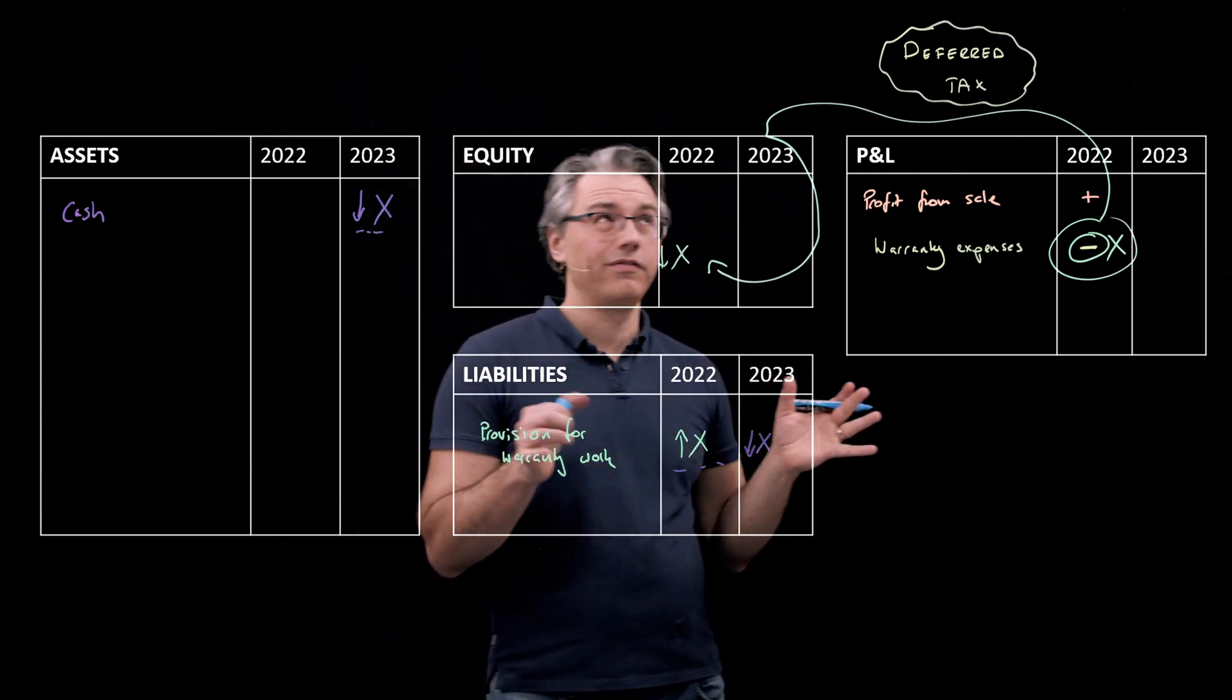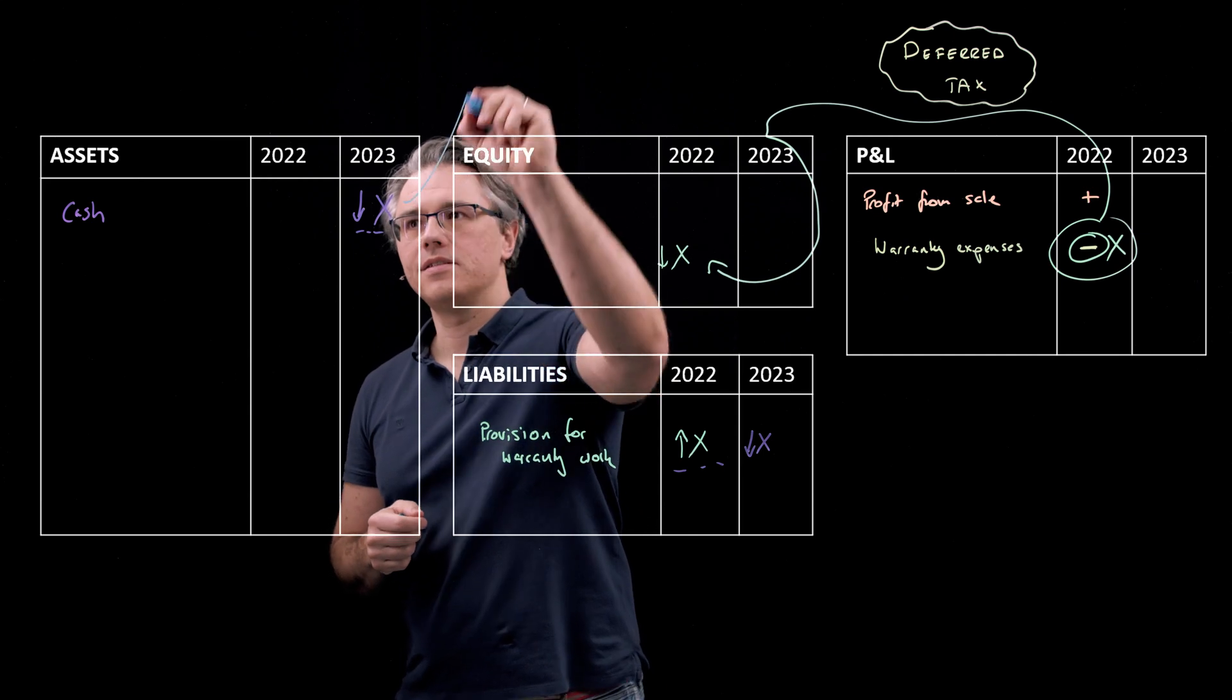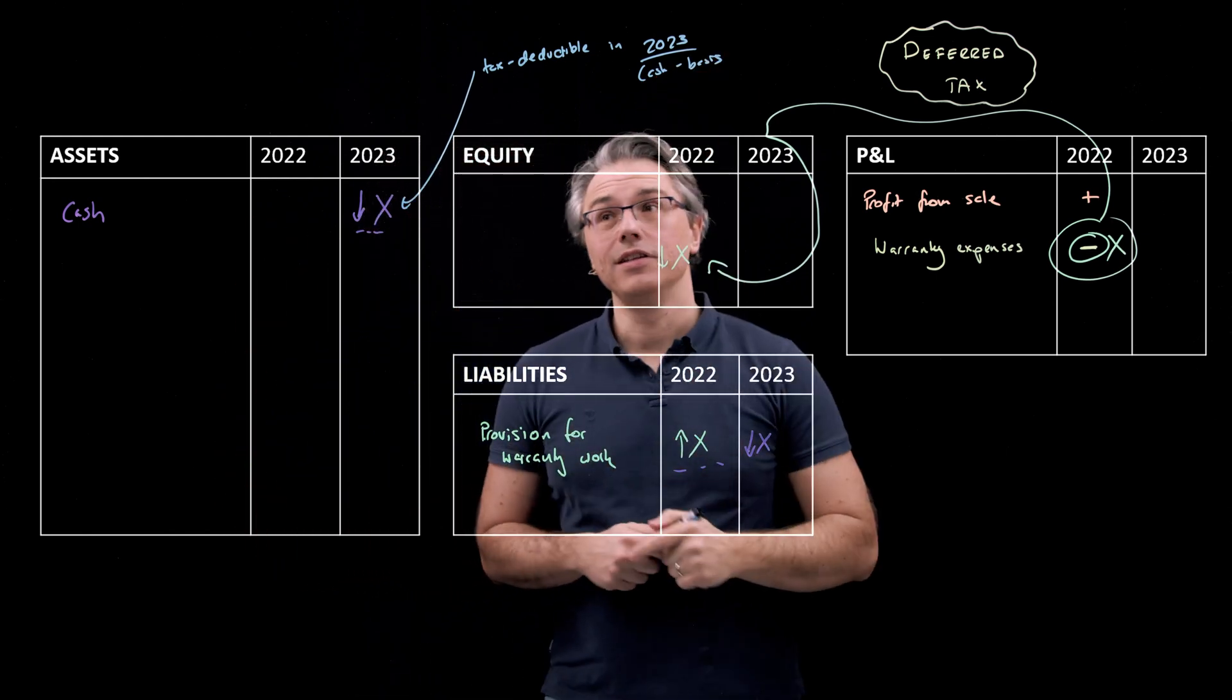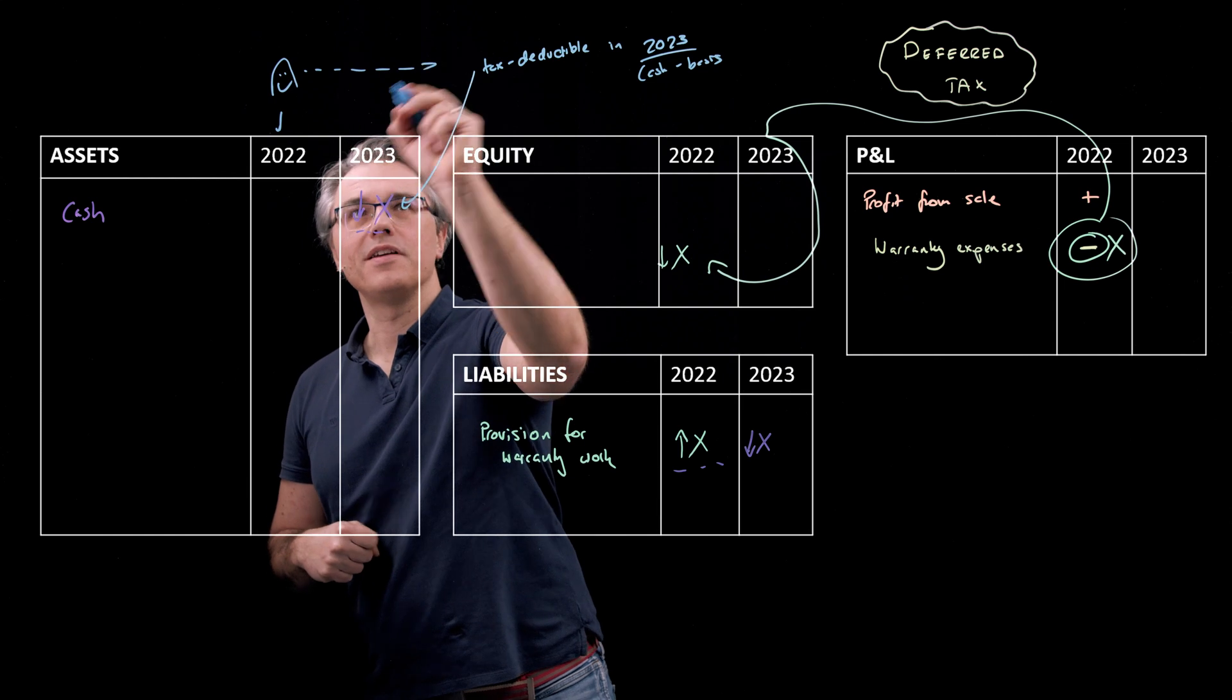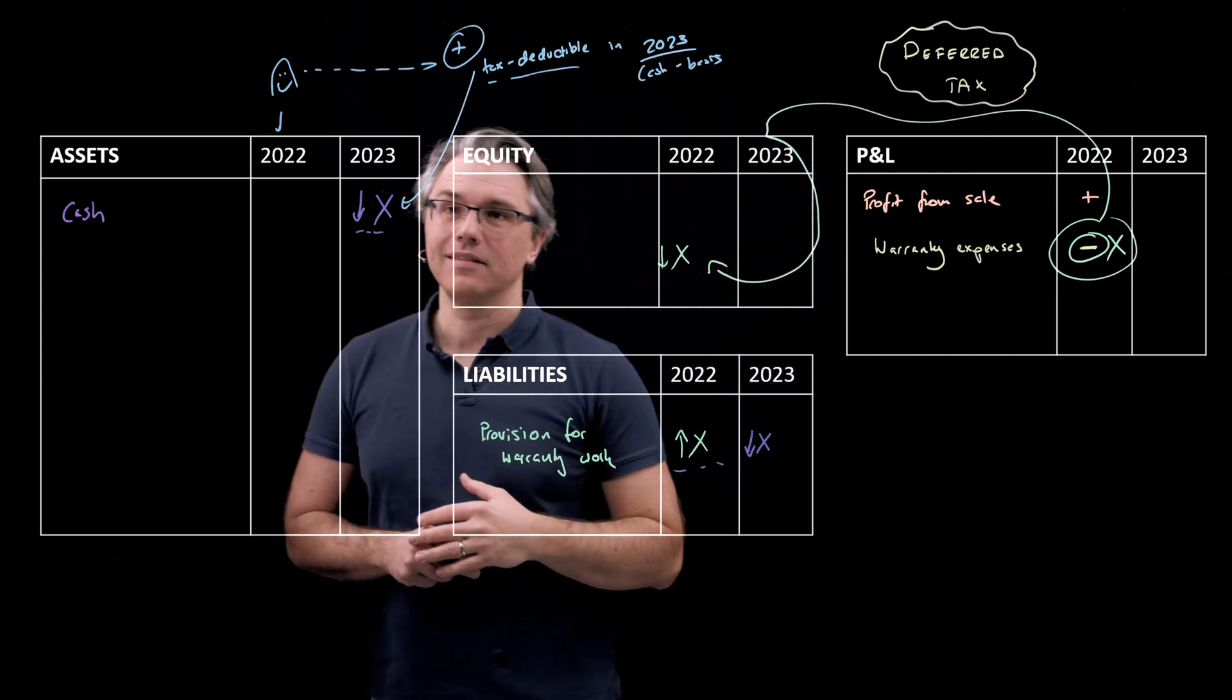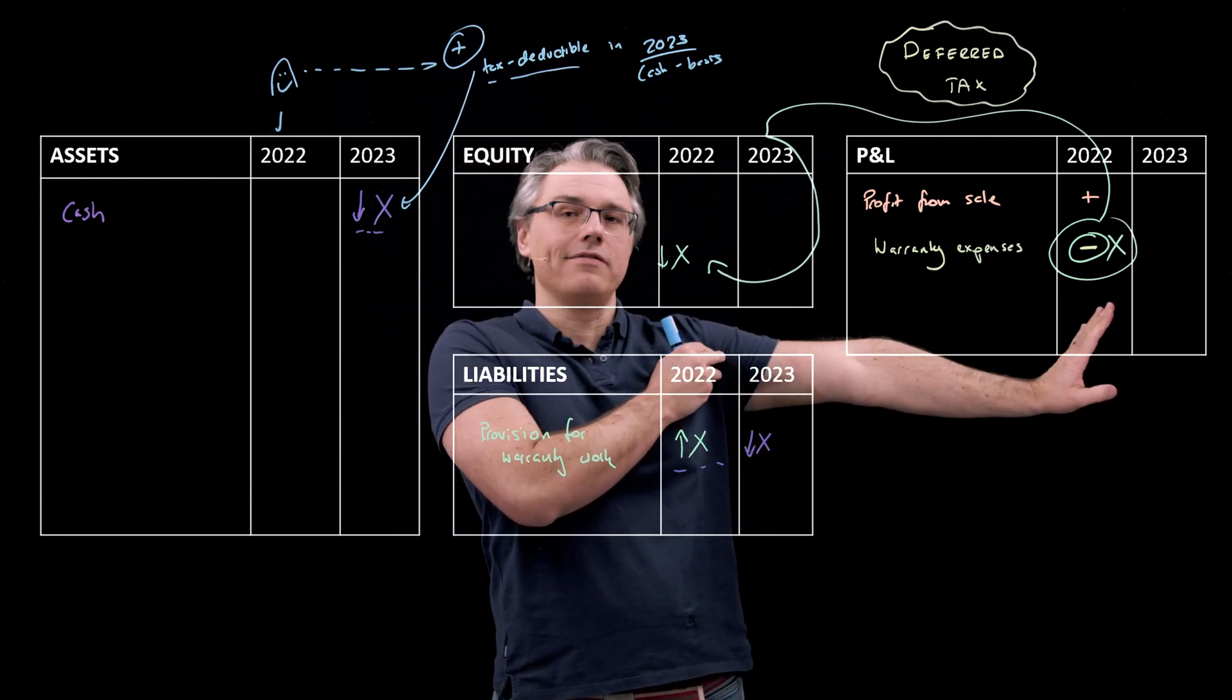Now, following the logic of the intuition behind deferred tax, you should appreciate that if this is tax deductible now on a cash basis, tax deductible in 2023, cash basis, then already in 2022, we are effectively looking forward, standing here. If you're standing here, you're kind of looking forward to something positive to the fact that in the future, when the expense is incurred, it will have a positive impact on our tax liability. We'll have less tax to pay because of that.